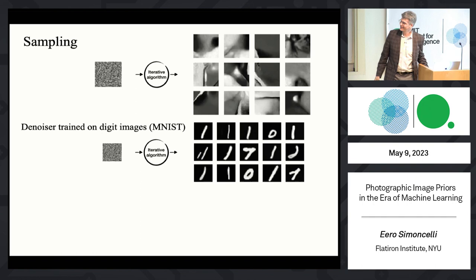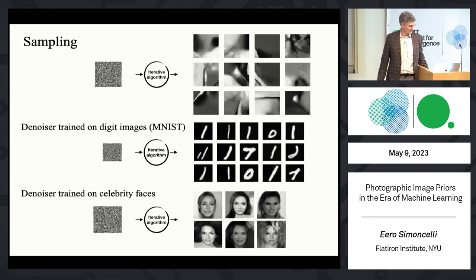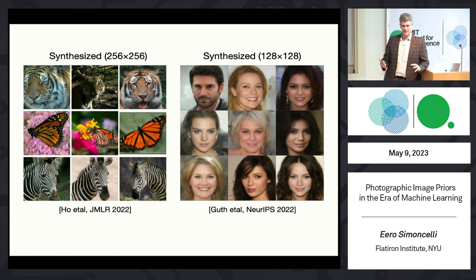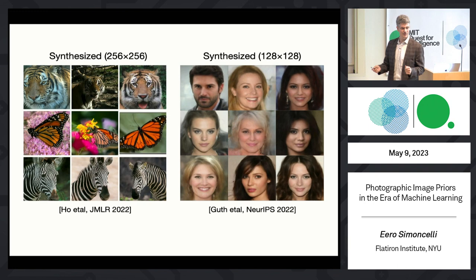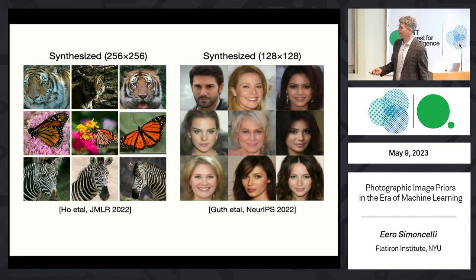If you train it on digits like MNIST, it generates things that look like digits. If you train it on faces, it generates faces — tiny ones, something like 32x32 or 40x40 faces. Out there in the real world, what we started looking at in terms of these processes turned into what's now known as diffusion modeling. People started generating fantastic, high quality images quite a bit larger than what I was showing. It's completely exploded.